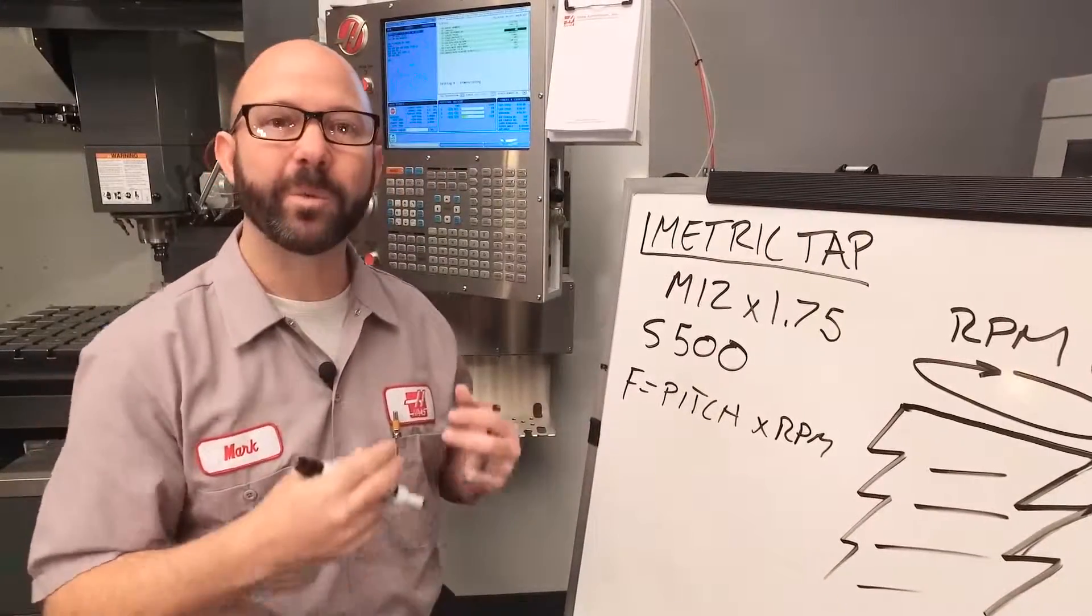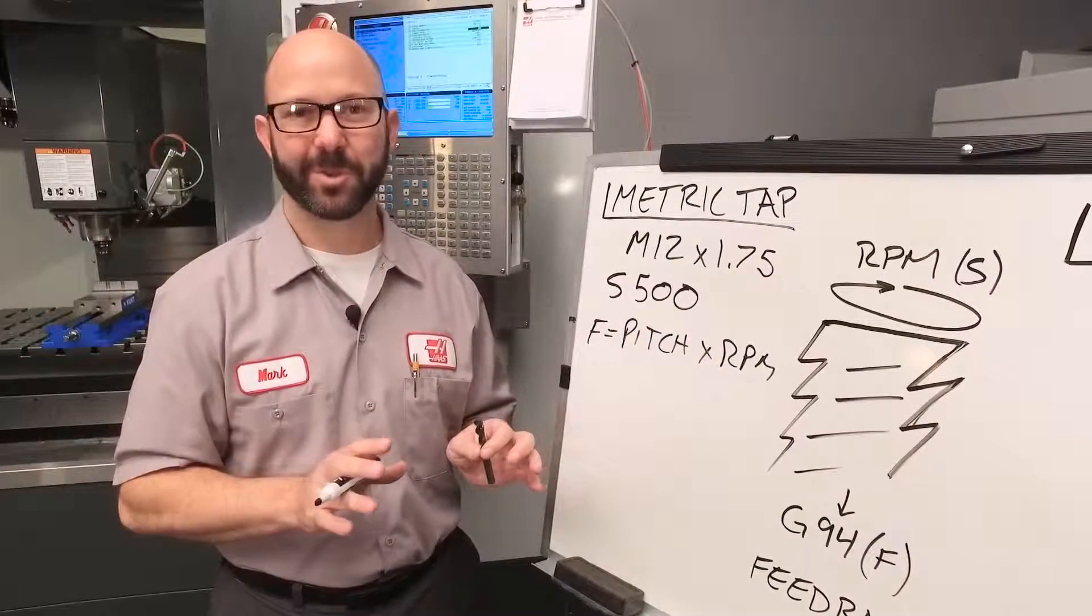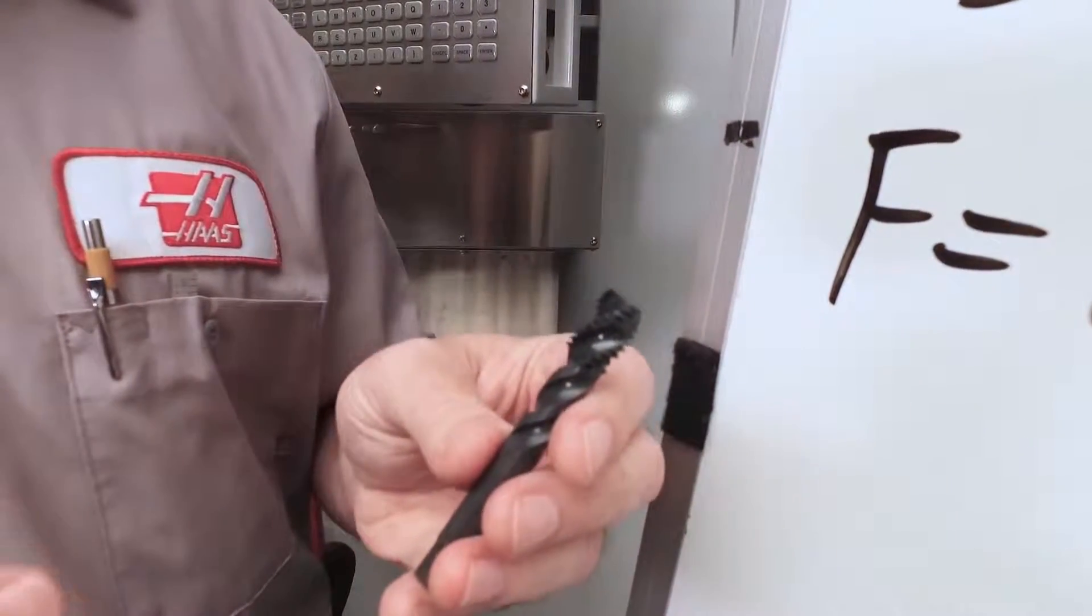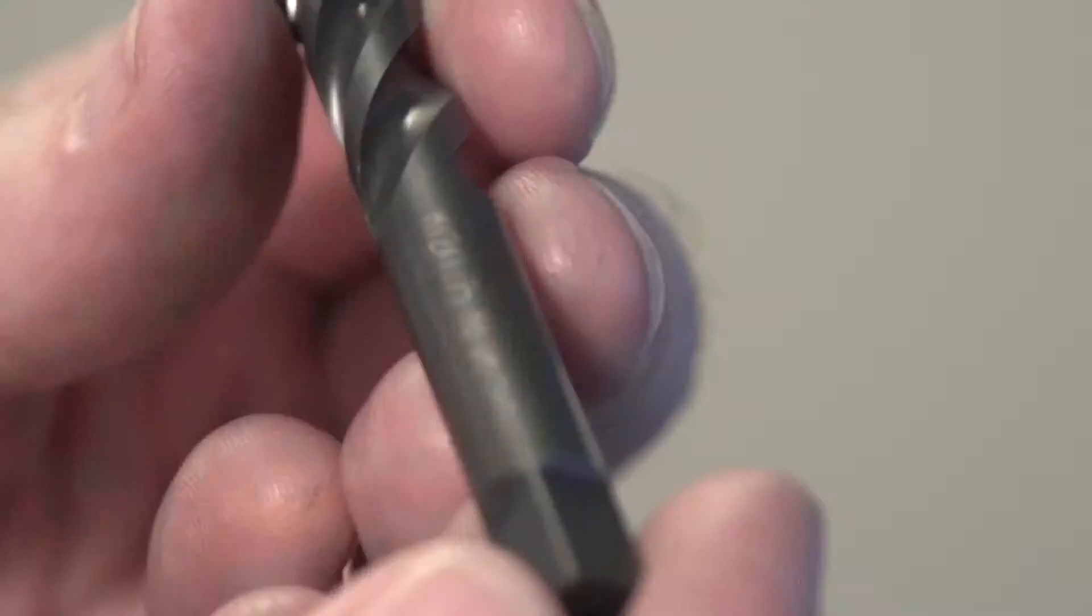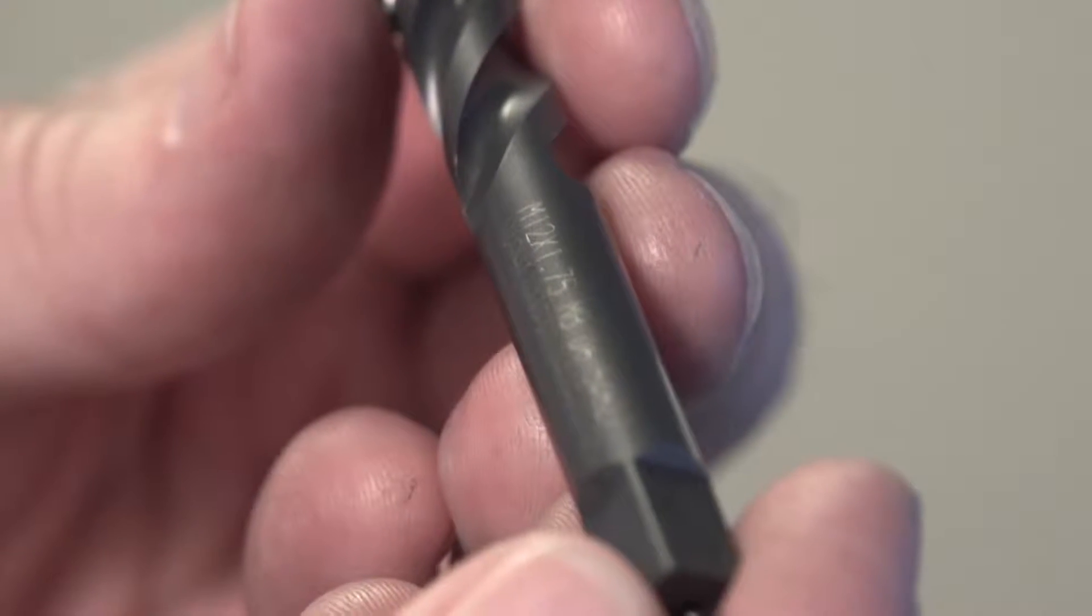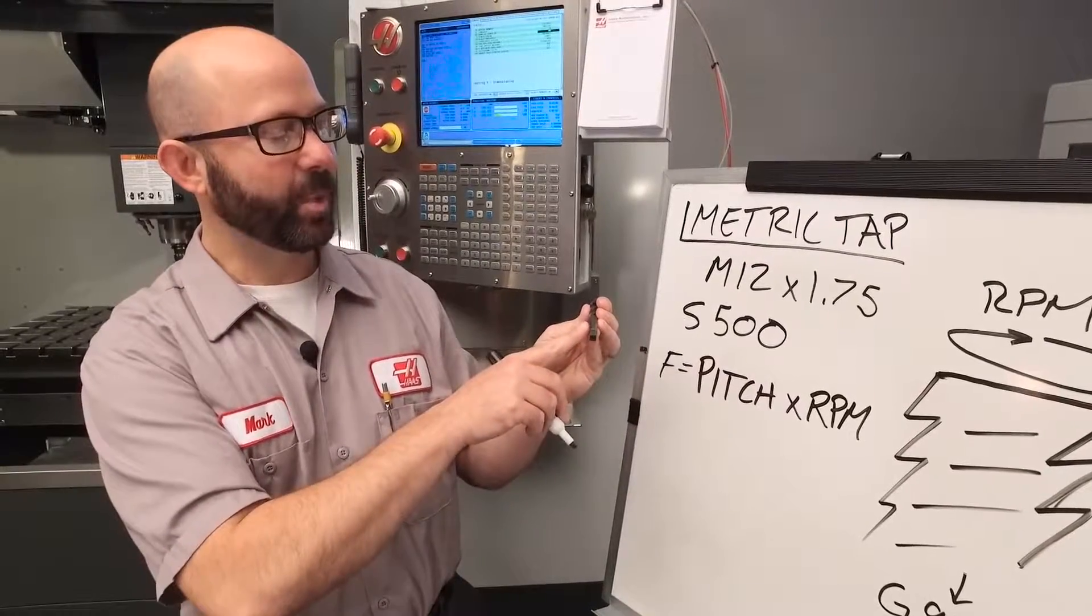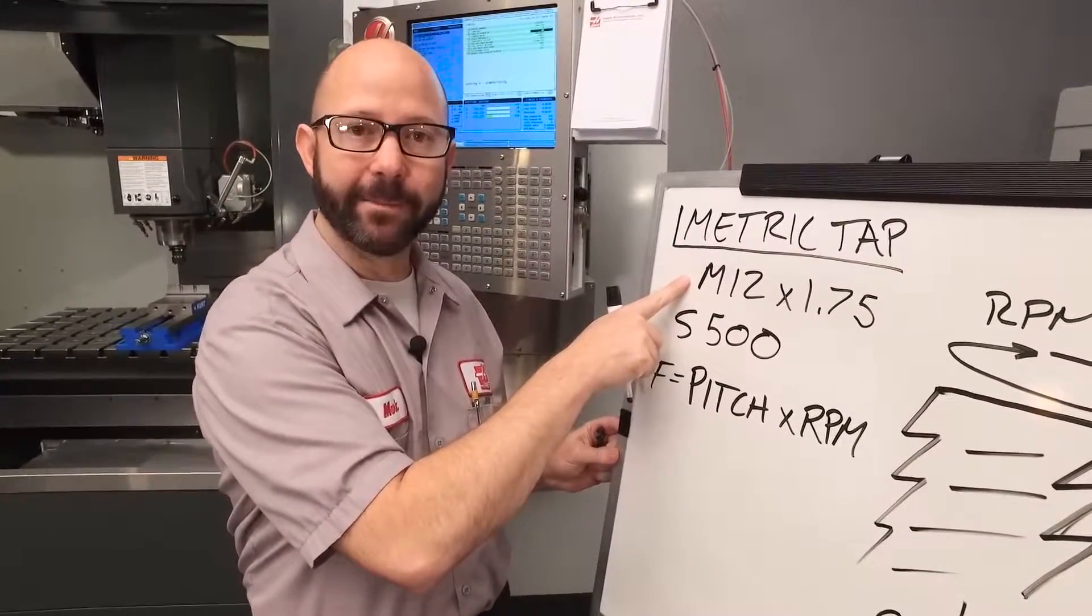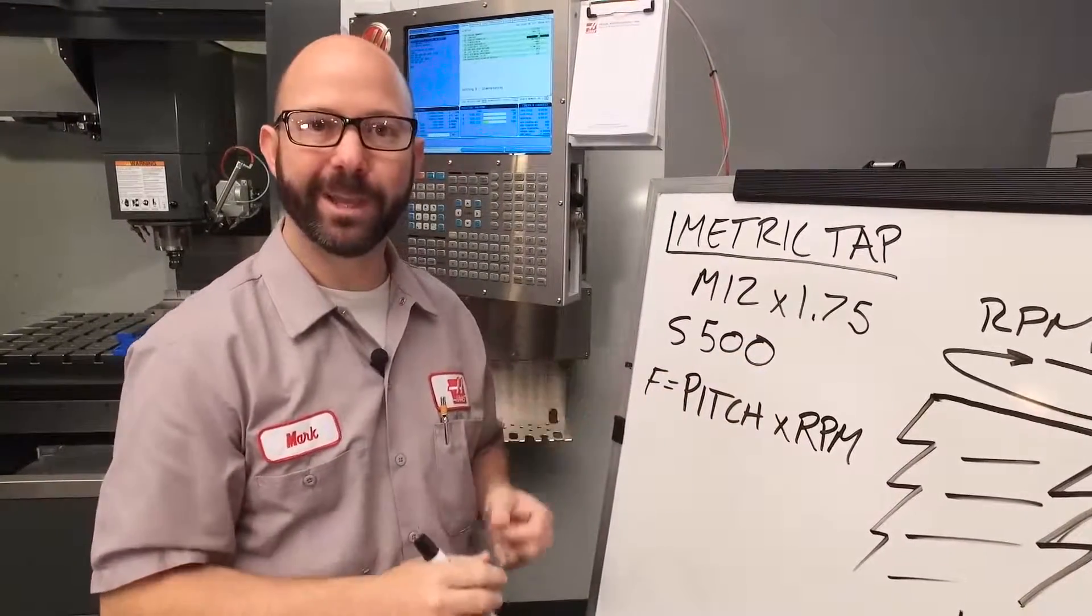Now pitch, what do we mean when we say pitch? Not that kind of pitch. We're talking about the distance from one thread to the next. This is also the distance our Z axis needs to travel with each full revolution, also known as our lead. Now where do we get our pitch from? Well lucky for me, it's actually written on my tap. M12 by 1.75. M12 is the basic diameter and 1.75, 1.75 millimeters, is our pitch.